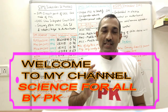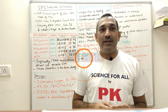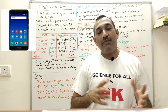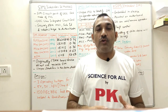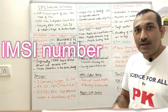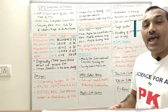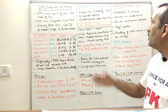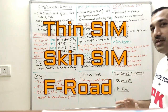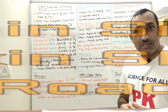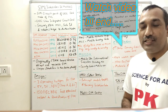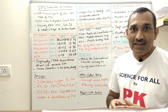Hi guys, welcome to my channel Science for All by PK. Today we are going to learn about SIM cards — what we use in day-to-day life in our mobile phones and various other devices. We are going to learn about SIM cards, IMSI numbers, MSISDN numbers, and new technology like eSIM, thin SIM, skin SIM, and f-rod. Watch the video to learn about all this technology.